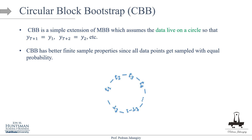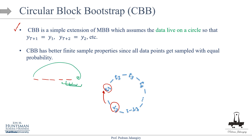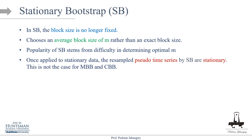Circular Block Bootstrap (CBB) is a simple extension of MBB that assumes the data lives in a circle — the last observation connects back to the first. This ensures all data points are sampled with equal probability, fixing the finite-sample bias in MBB where the very last observations have fewer chances of appearing in the bootstrap sample.